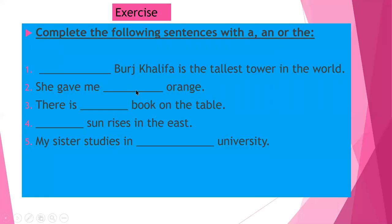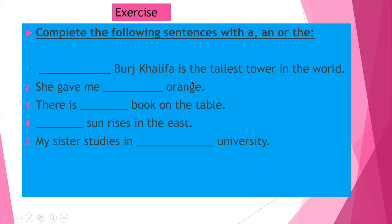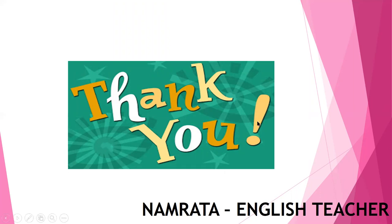Now let's look at some exercises. The Burj Khalifa is the tallest building in the world — this is a particular building, so we use 'the': 'The Burj Khalifa'. She gave me an orange — talking in general, so it's 'an orange'. There is a book on the table — in general about any book, so 'a book'. The sun rises in the east — sun is particular, so 'the sun rises in the east'. My sister studies in a university — talking about any university in general, so 'a university'. I hope you understood. Thank you very much.